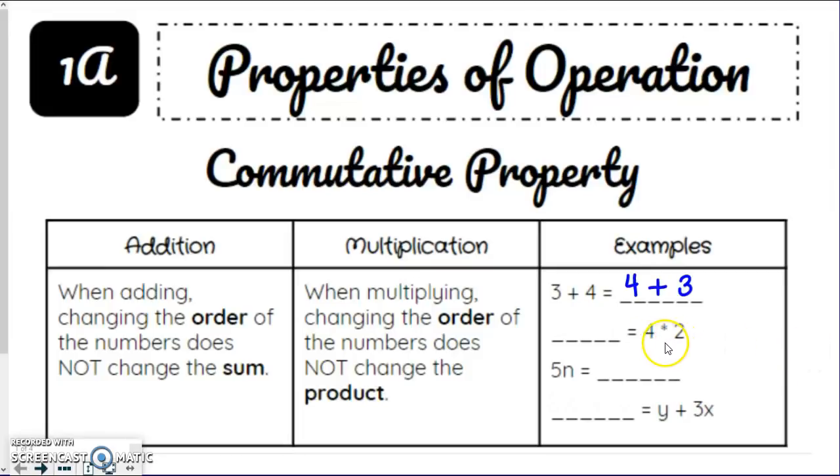Same thing with multiplication here. 4 times 2 is the same thing as saying 2 times 4. And you can use the asterisk or the times sign or the dot, whatever you prefer. Here's another one just now with an algebraic expression. This is saying 5 times n, so we could also say n times 5. And if you want to use a multiplication symbol, that's fine. Try not to use x, because then it gets confusing. And then down here, we have y plus 3x. That's the same as if we just flipped it and said 3x plus y.